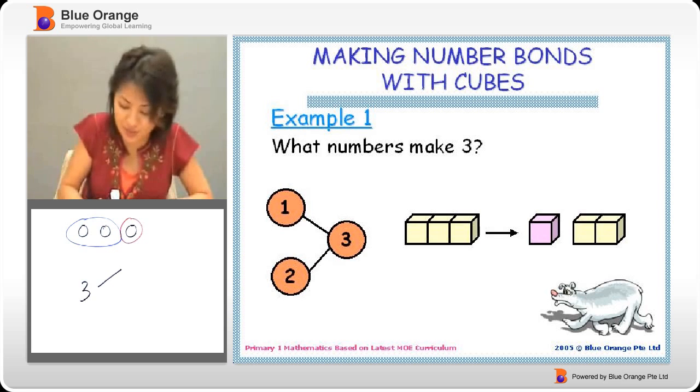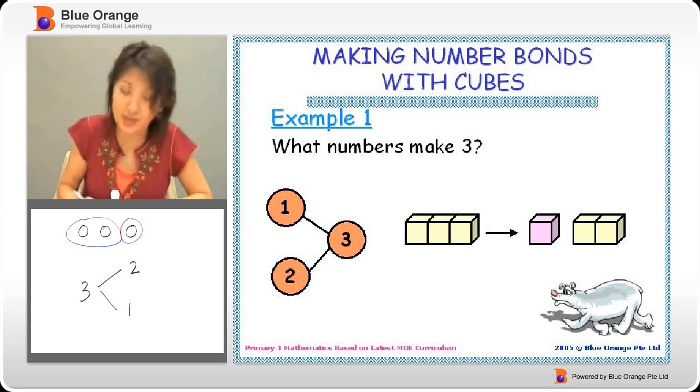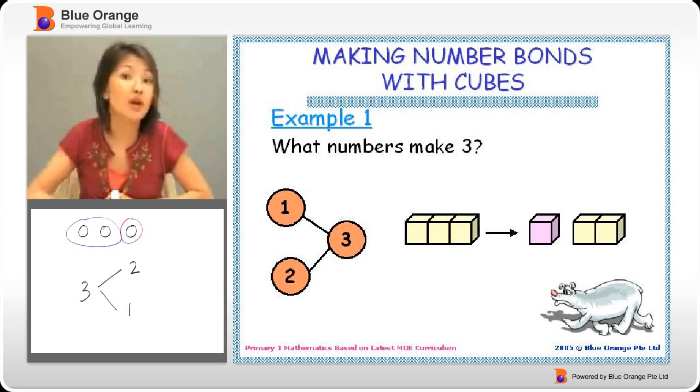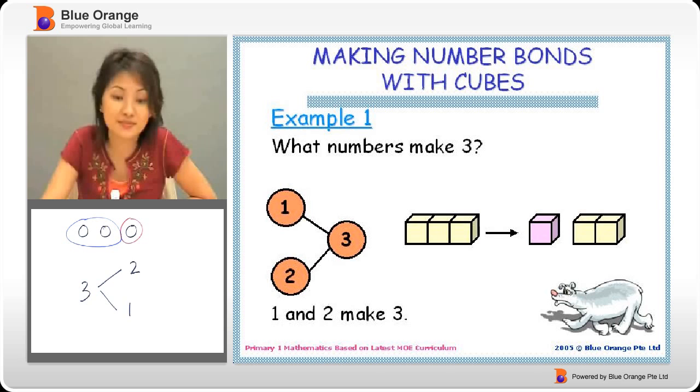Three is split into two and one. So, we say that two and one are the number bonds of three. One and two make three.